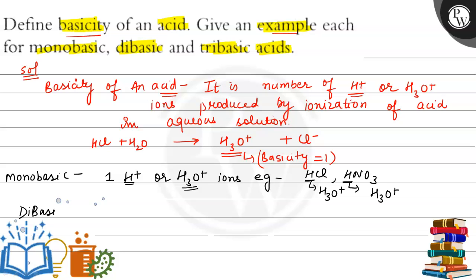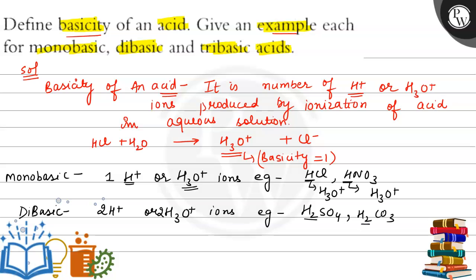In monobasic acids there is one hydrogen, producing one H₃O⁺ ion. In dibasic acids, there are two H⁺ ions, and upon ionization they give two H₃O⁺ ions. Examples are H₂SO₄ (sulfuric acid) and H₂CO₃. Both of these have two replaceable hydrogens.